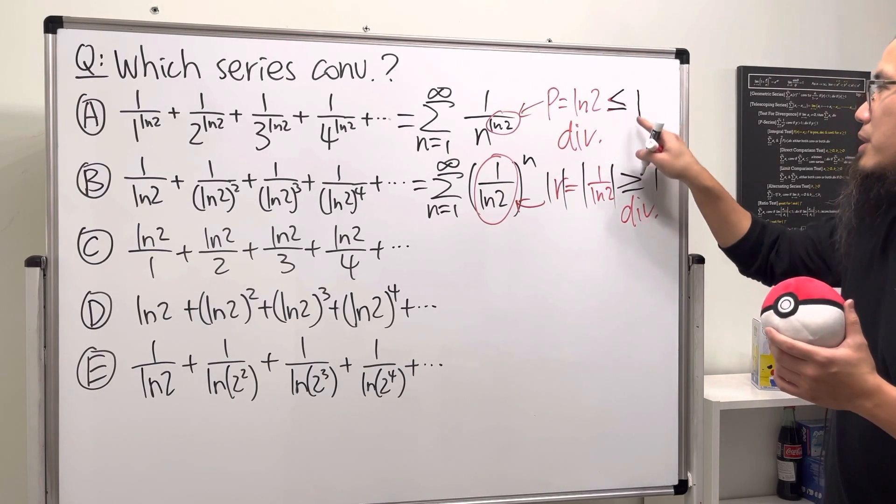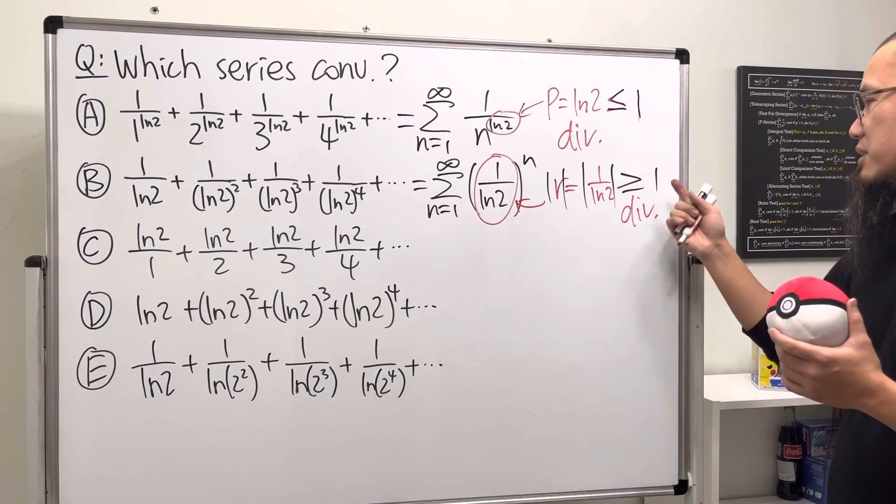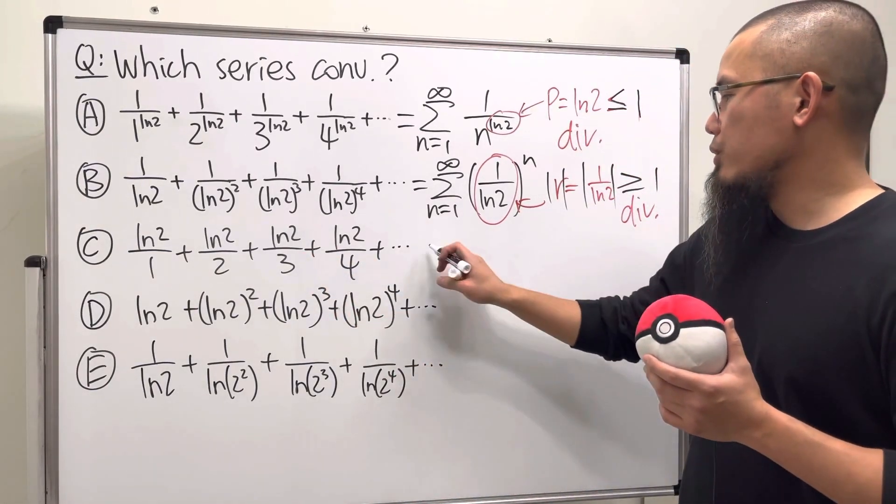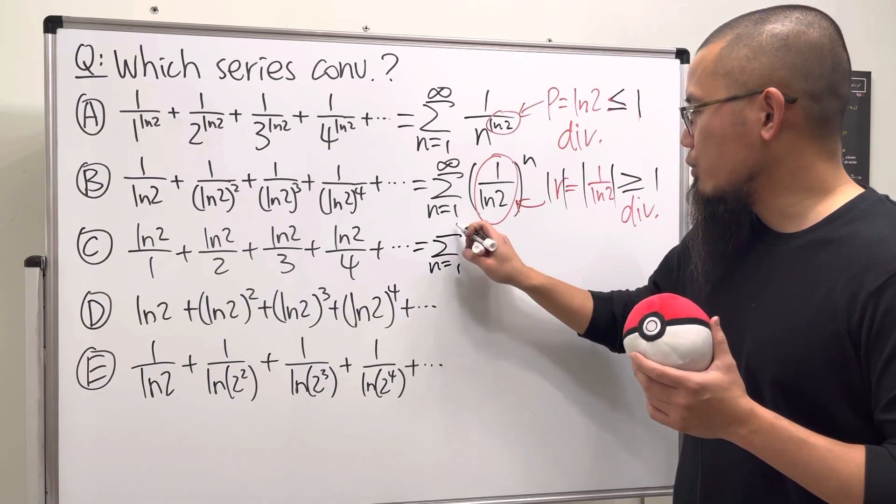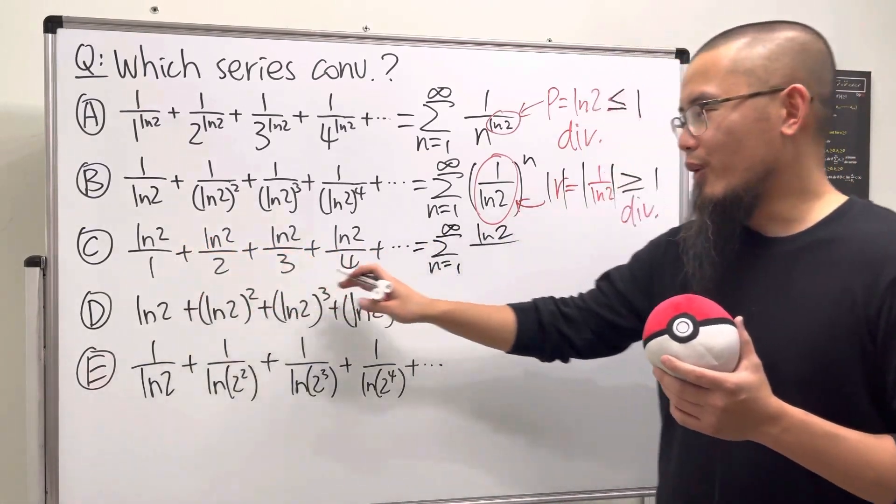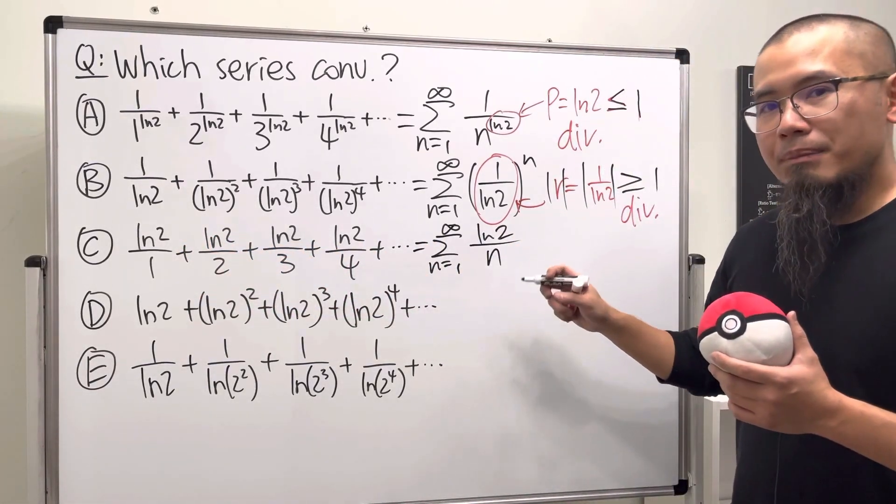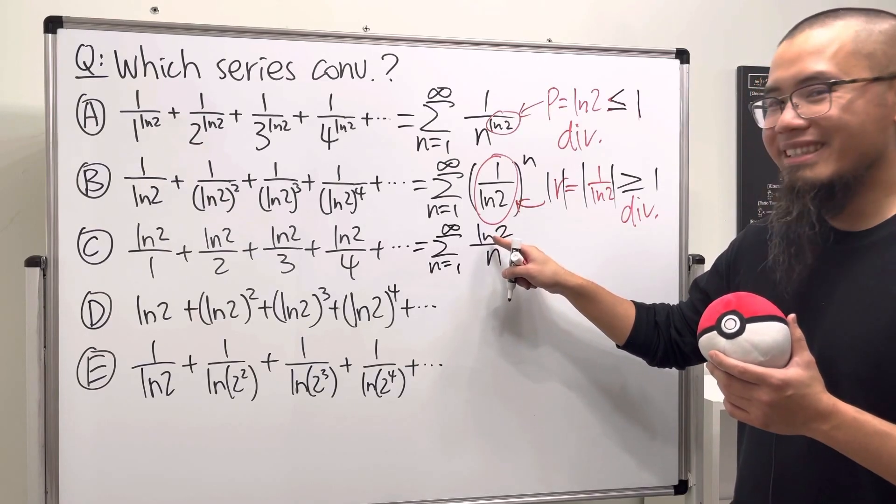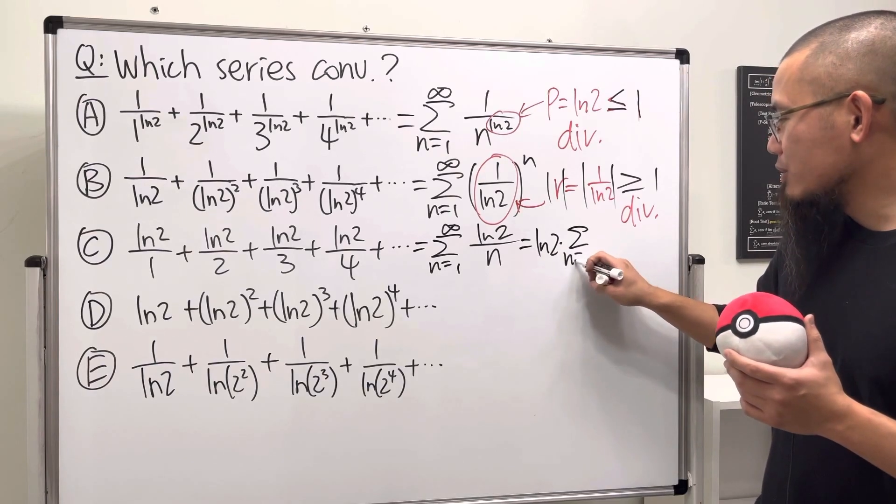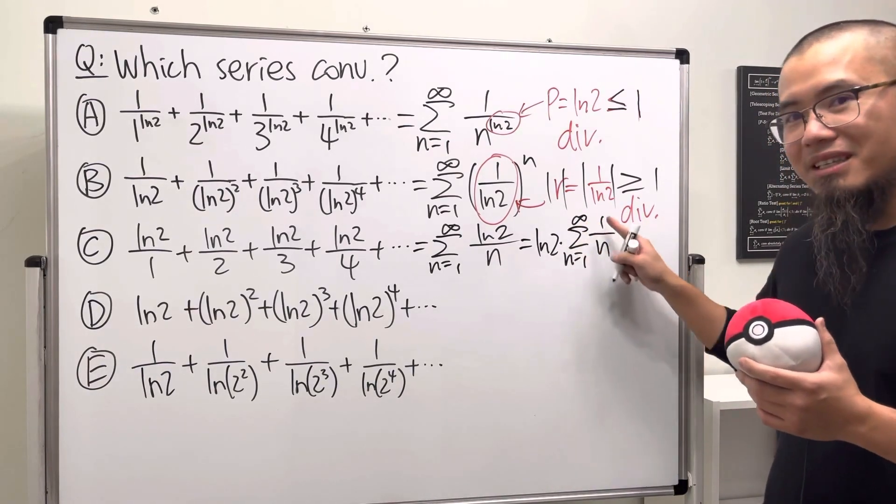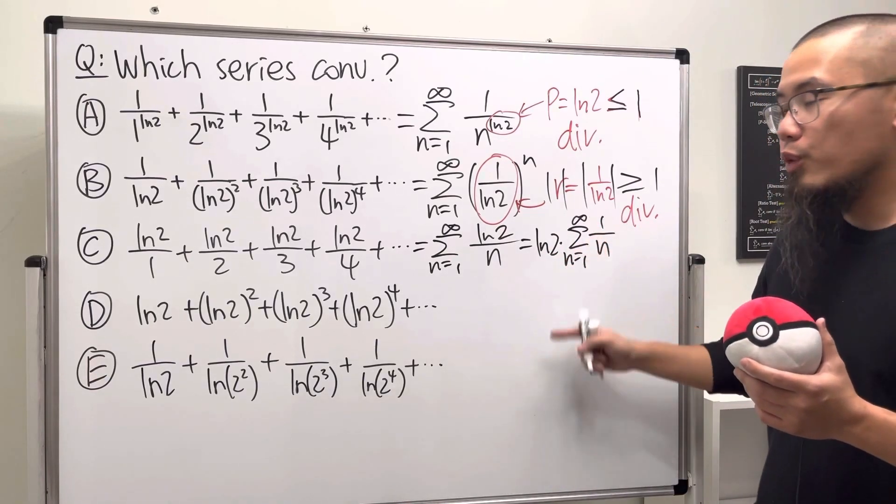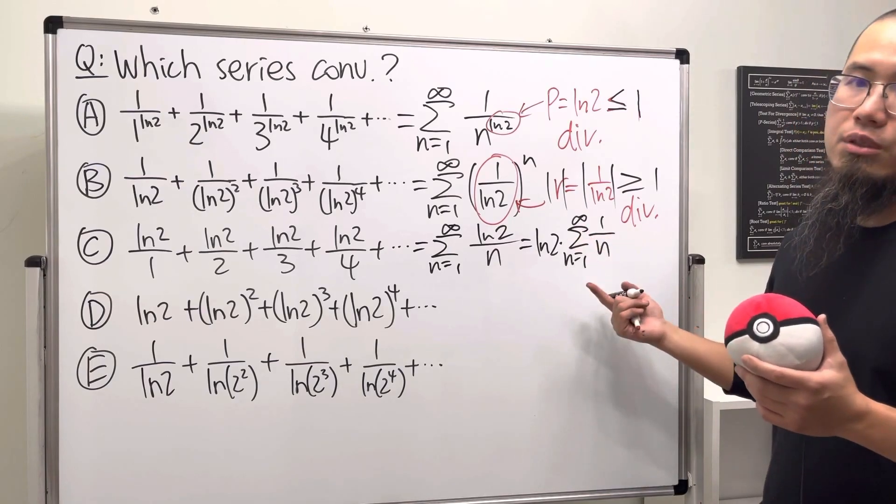Okay, C. Everything on top is ln2. So here we have the series as n goes from one to infinity, ln2 on the top over 1, 2, 3, 4 on the bottom, which is n. But notice this is just ln2 times the series as n goes from one to infinity of 1 over n—namely, this is the harmonic series, right? ln2 times the harmonic series, which we know diverges, is still going to diverge. Yeah, so still diverges.